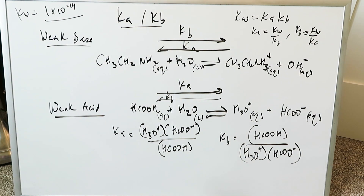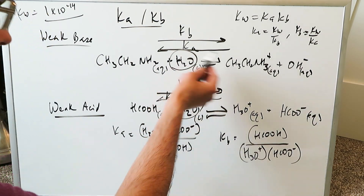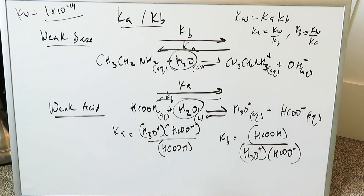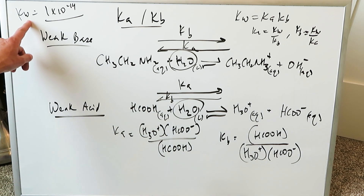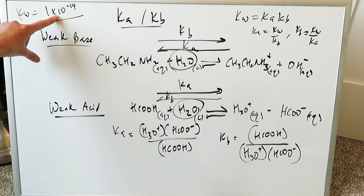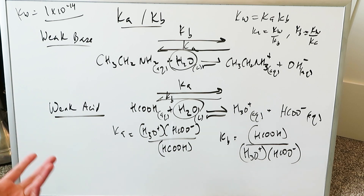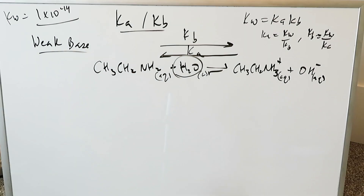Kw is related to water because of the commonality involved — these reactions are occurring in water. Kw comes from 1 × 10⁻⁷ concentration of hydrogen ions and 1 × 10⁻⁷ concentration of hydroxide ions coming from water, giving you Kw = 1 × 10⁻¹⁴.